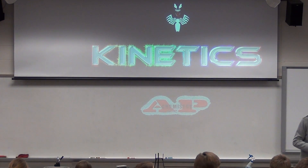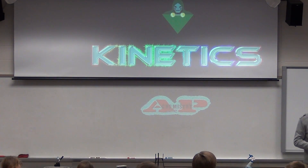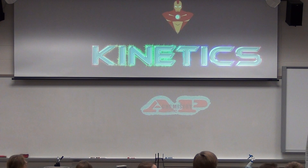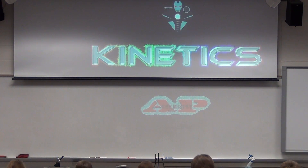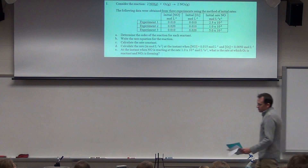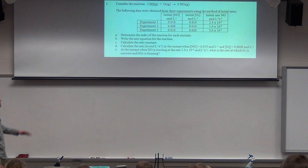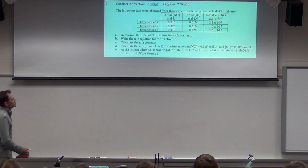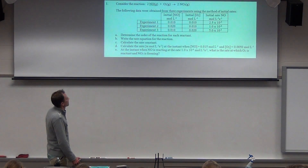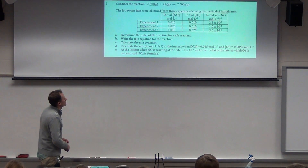Any questions? You were supposed to have tried one and two, so let's try to actually execute those things. Could you do 1E? Sure. So here's problem number one. The first A through D has to deal with getting the order, getting the rate law, getting the rate constant, and then letter D, you plug in new values into that rate constant. E is a little different.